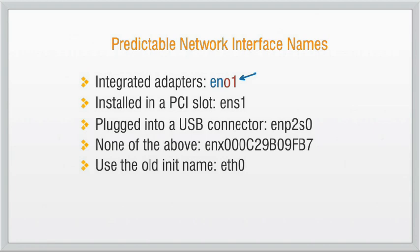If the network adapter is plugged into a PCI slot instead of being integrated into the motherboard, systemd will use the index number of the slot itself, provided by the UEFI firmware or BIOS, to construct the alias. For example, 'en' indicates an Ethernet interface, and 's1' indicates the hot-plug slot index number where the network interface card has been inserted.